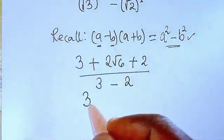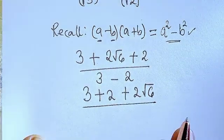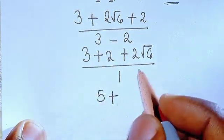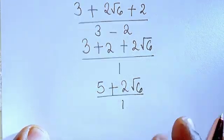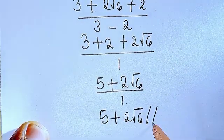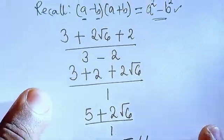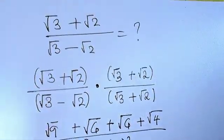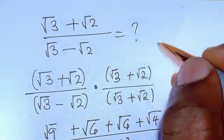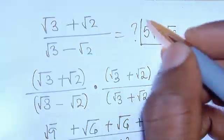So we have 3 plus 2 plus 2 root 6 over 3 minus 2, which gives us 1 in the denominator. So we have 3 plus 2, that is 5, plus 2 root 6 over 1, and anything over 1 is just that number. Therefore we have 5 plus 2 root 6, and that is the solution. So root 3 plus root 2 over root 3 minus root 2 simplifies to 5 plus 2 root 6.